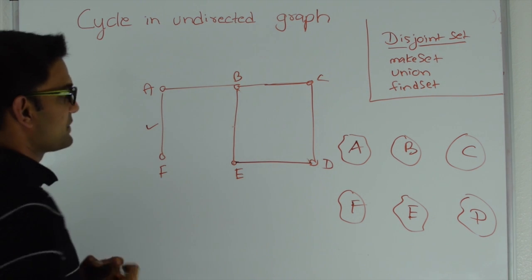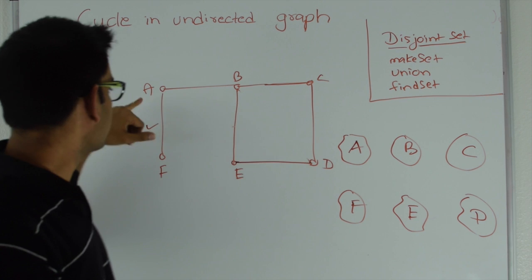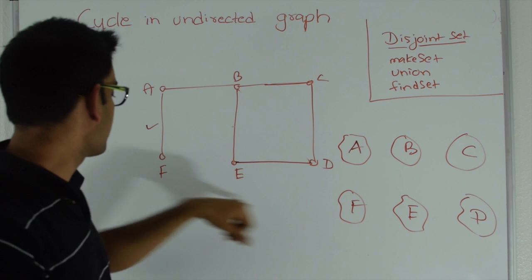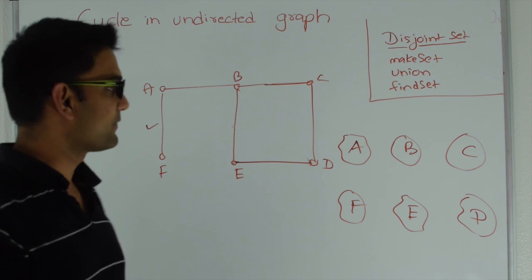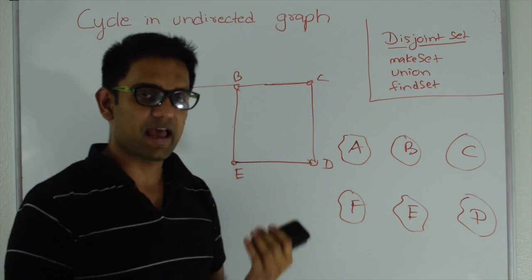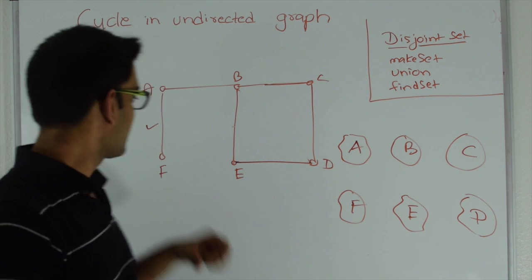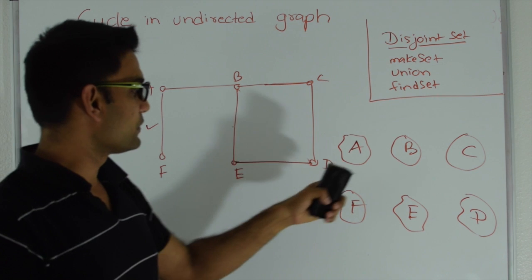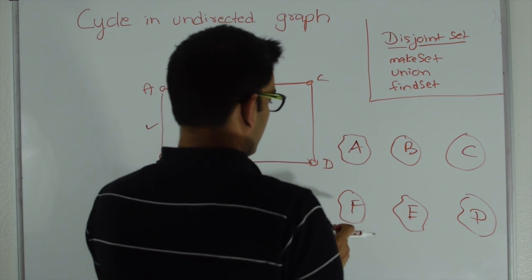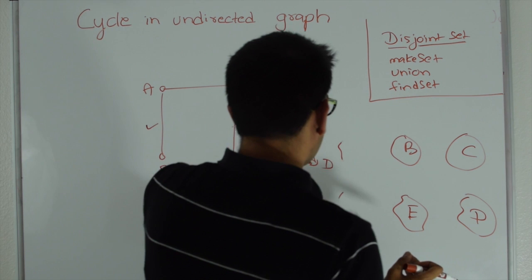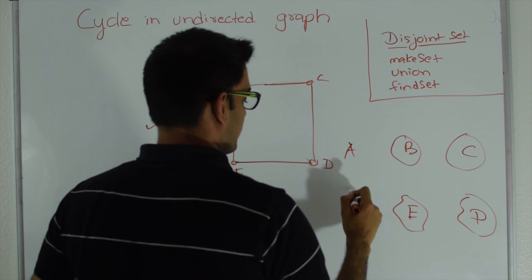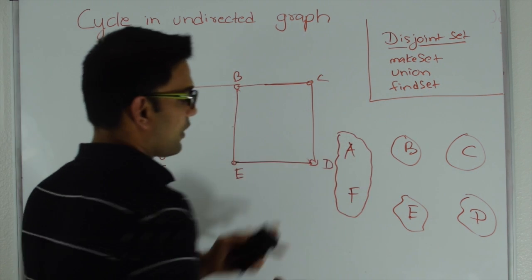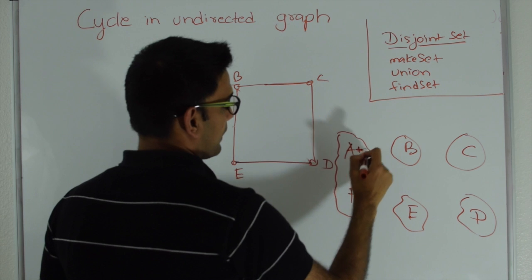Then I pick any edge — let's say I picked edge A-F. I do a find set on A, which returns A, and then a find set on F, which returns F. At this point both A and F are not in the same set, meaning adding this edge is not going to create a cycle. So we do a union of these two sets — A and F are now together, and let's say the set is represented by A.